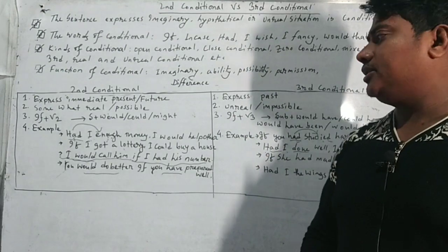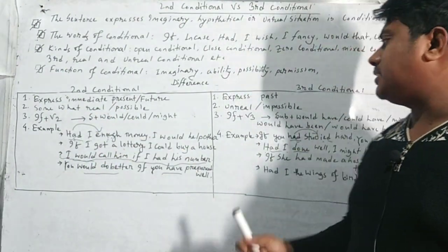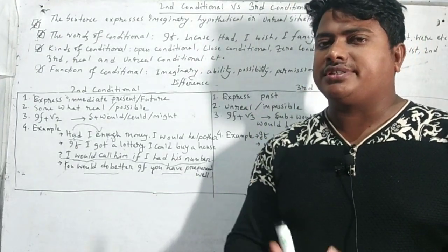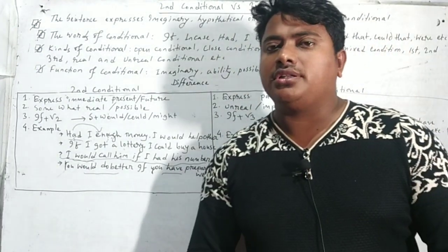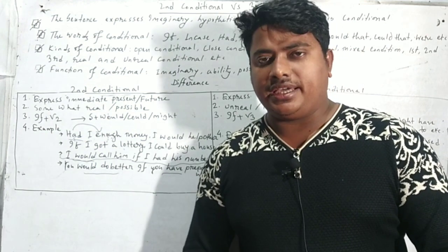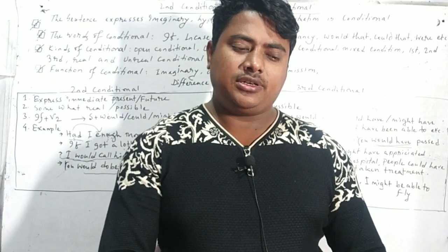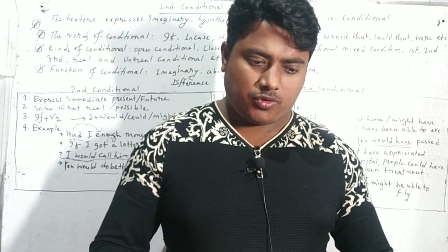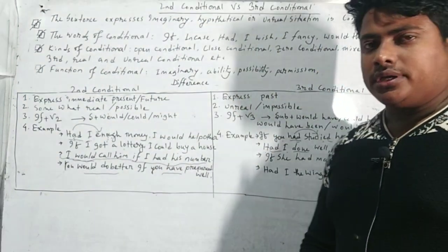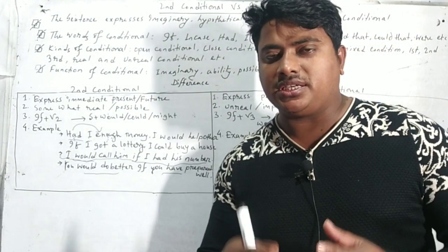Now the third conditional. Second conditional expresses immediate present or future, but third conditional expresses past, past happening, past incident, past actions. Then it is not real, it is not possible, it is not doable because past cannot come back again. If anything happened in past, is it possible to come or represent it newly in present? Of course not. So third conditional is always unreal.